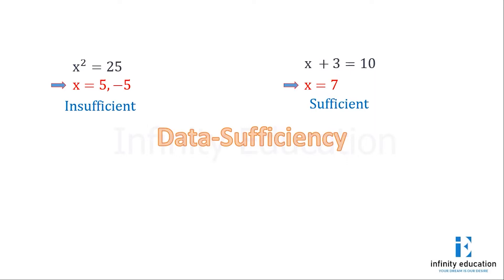Here we can say this is sufficient because there is no other value of x apart from 7 for which the equation can be satisfied. So basically in data sufficiency questions, we are looking for a definite answer. I hope the concept of sufficient and insufficient is a bit clear to you. Now let's see some examples.